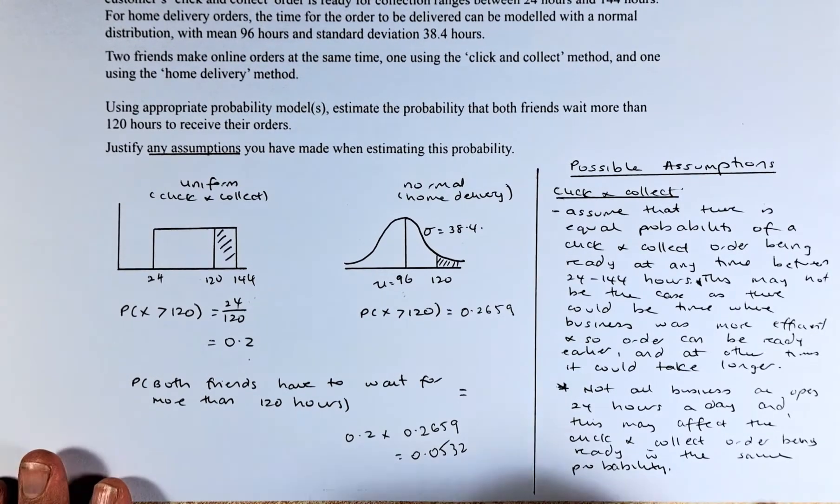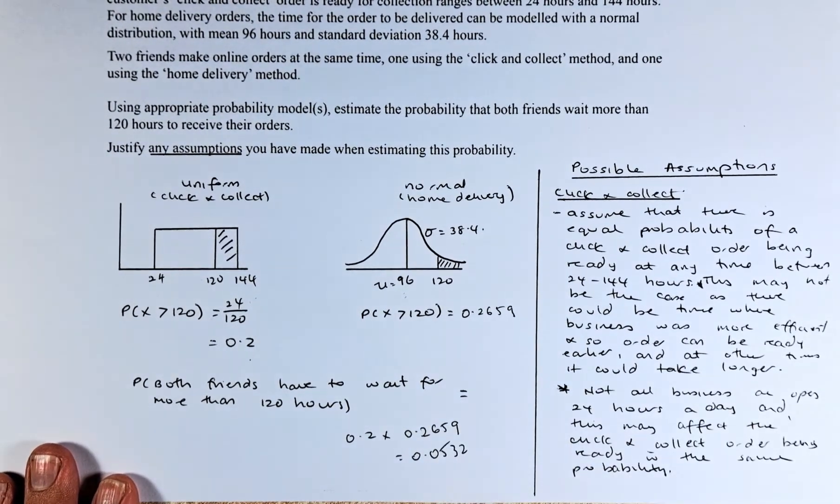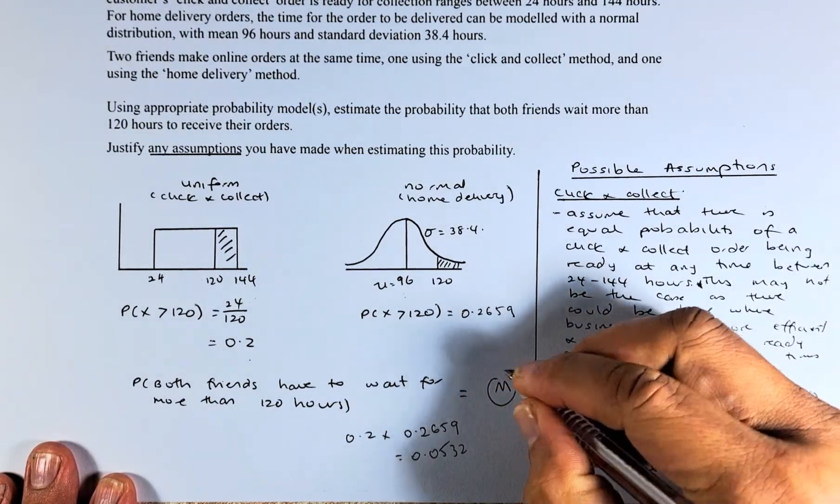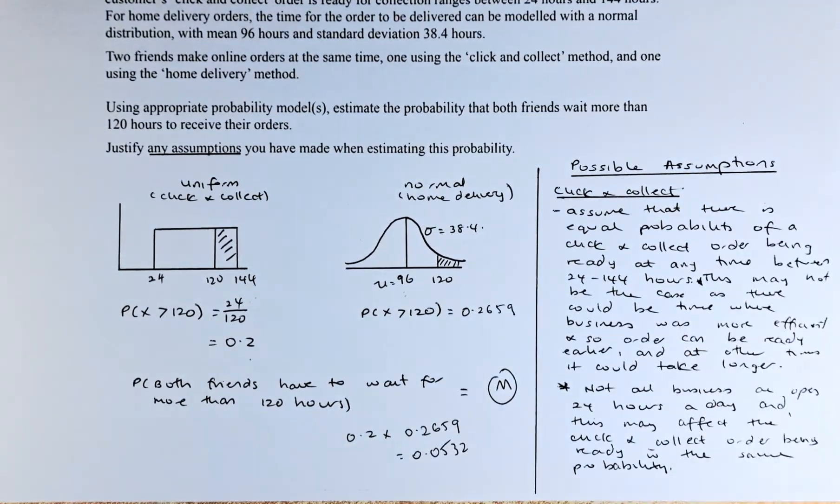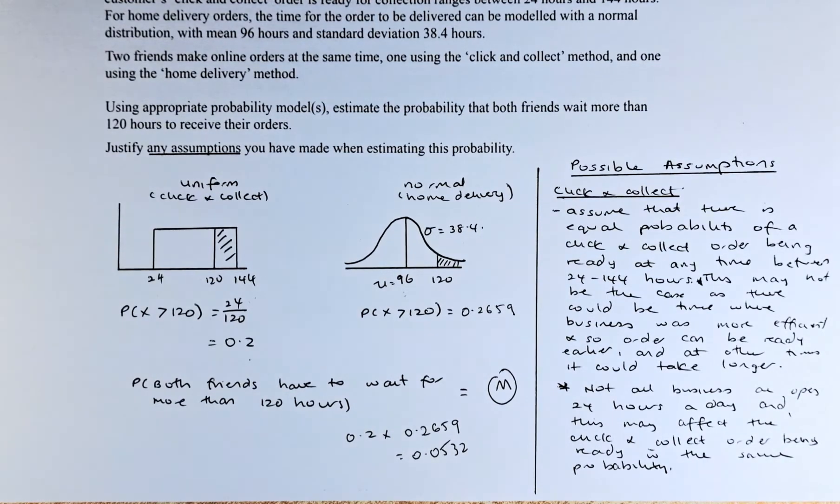That will give you a merit. To get excellent, you need to give a possible assumption. They ask you to justify any assumption you have made while estimating the probability, so we are going to give you two.